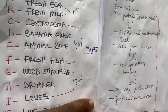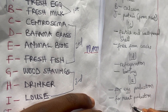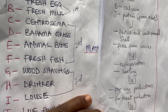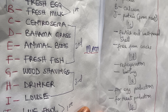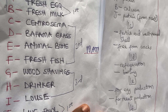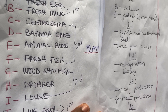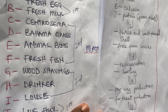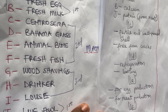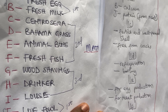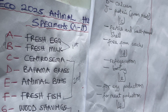The next predicted question is to list two management practices used to improve the productivity of specimen J (live fowl).